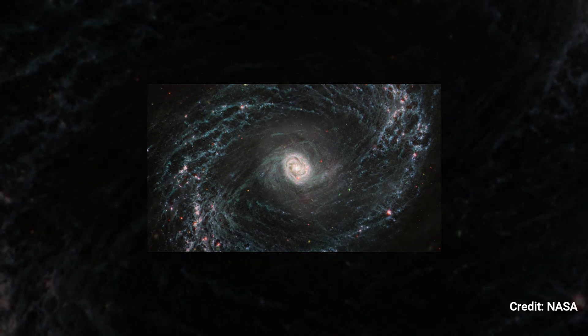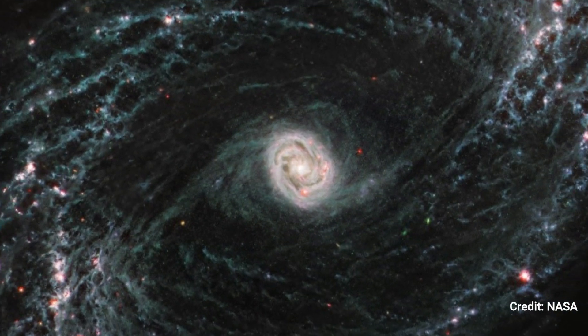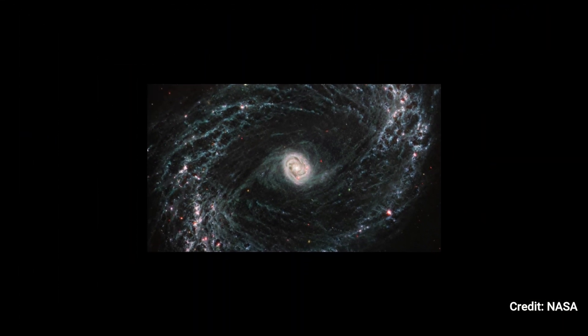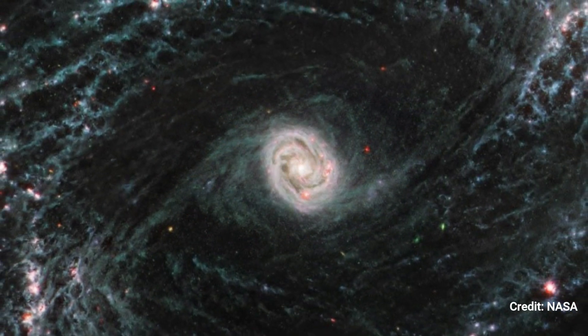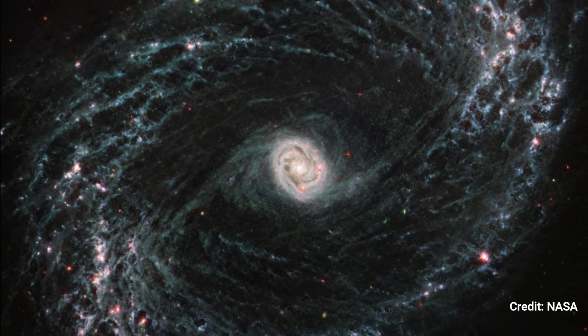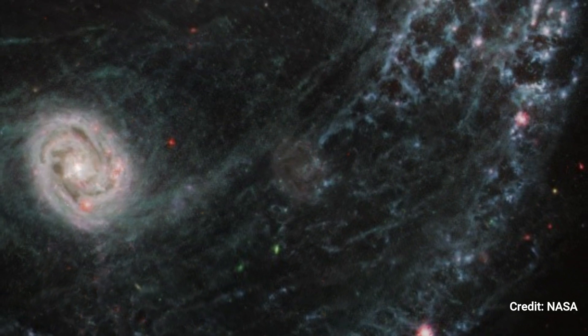With Webb's extraordinary resolution, a compact, brilliant core with a distinctive double ring structure sparkles in exquisite detail near the galaxy's core. The double ring in this case is really tightly wrapped spiral arms that went into an oval form along the galaxy's bar.